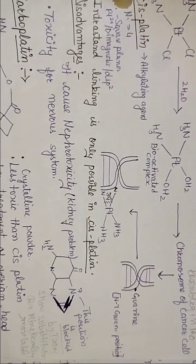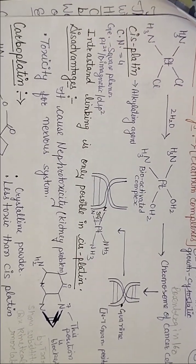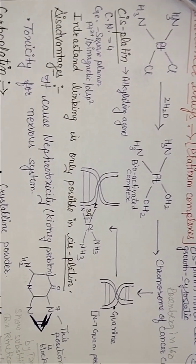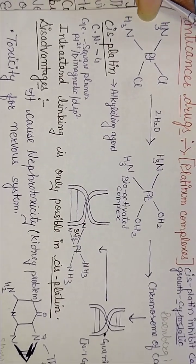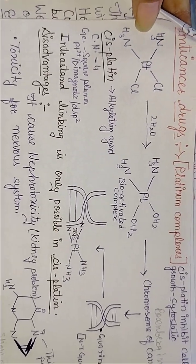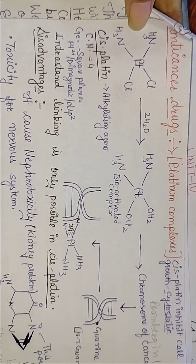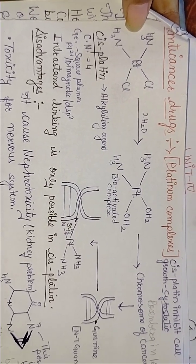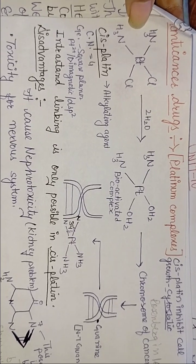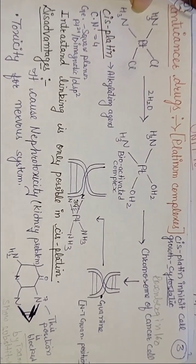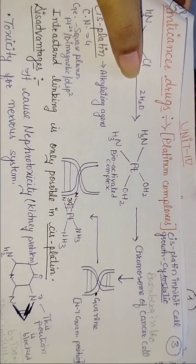We have to discuss transplatin and cisplatin structure, which has coordination number 4, square planar shape, dsp2 hybridization, and platinum which is two positive and diamagnetic.